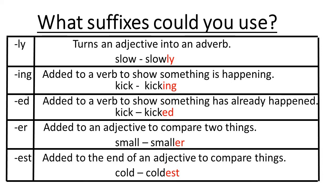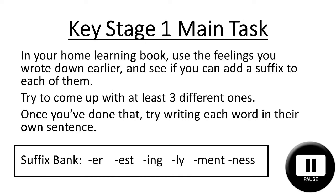'-er' could be added to an adjective to compare two things — for example, 'small' and 'smaller'. And finally, '-est' could be added to the end of an adjective to compare things — for example, 'cold' or 'coldest'. So a reminder, Key Stage 1, of your main task: in your home learning book, use the feelings you wrote down earlier and see if you can add a suffix to the end of them. Try to come up with at least three different ones. Once you've done that, try writing each one in their own sentence. Remember to use the suffix bank: -er, -est, -ing, -ly, -ment, and -ness.